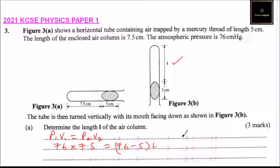So if you make L the subject, L is equal to 76 multiplied by 7.5 and you divide by 71. That is 76 minus 5 and that is equal to, when you use your calculator you should be able to get 8.03 cm. And this is to 2 decimal places.